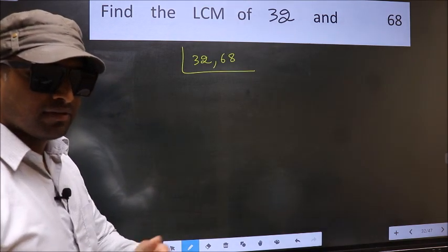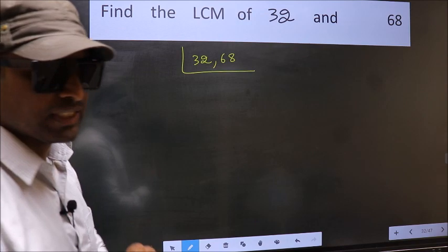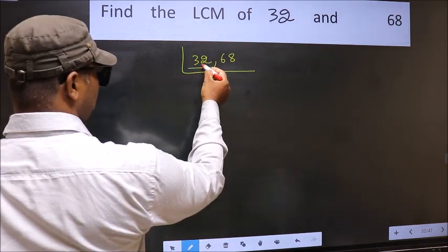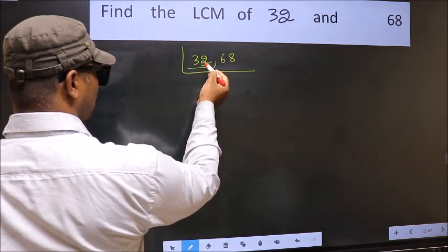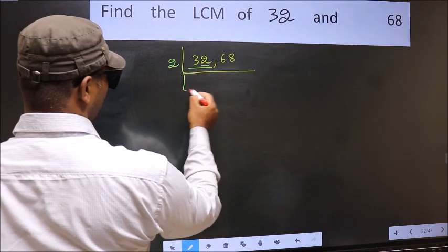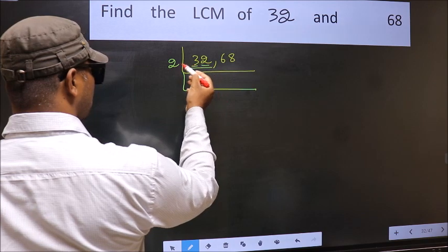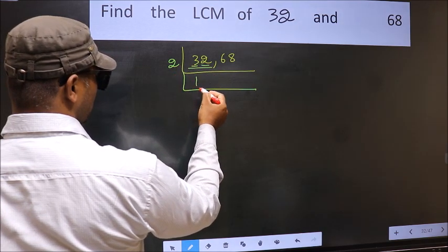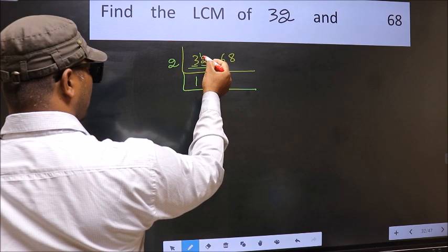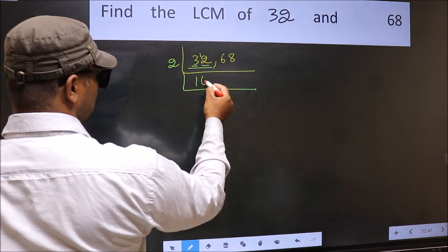Now focus on the first number, which is 32. The last digit is 2, so take 2. The first digit is 3; a number close to 3 in the 2 times table is 2. So 3 minus 2 is 1, with 1 carried forward to make 12. When do we get 12 in the 2 table? 2, 6, 12 — so 32 divided by 2 gives 16.